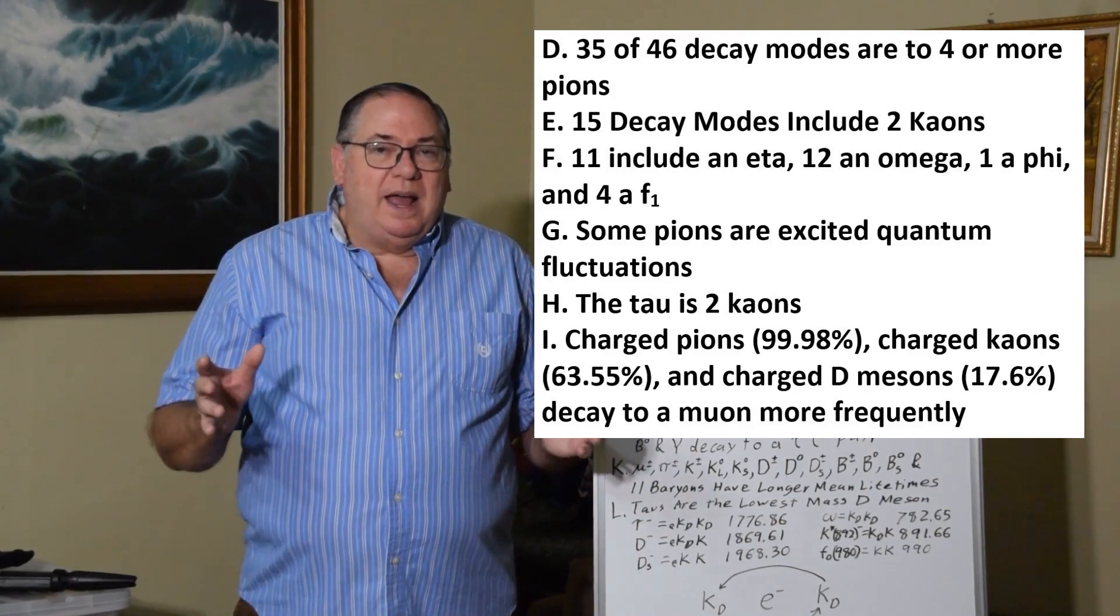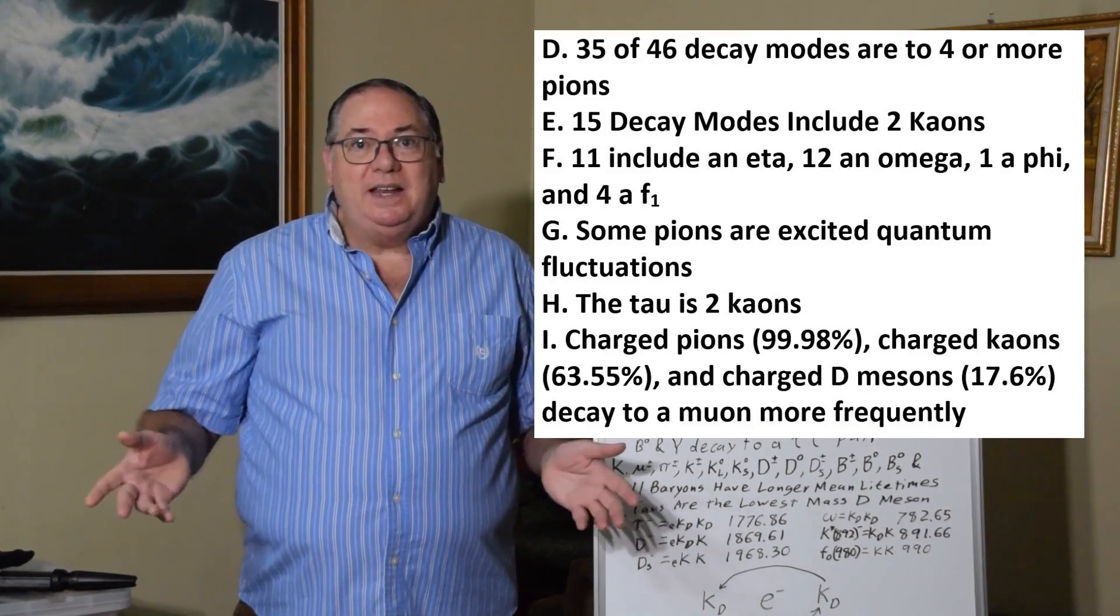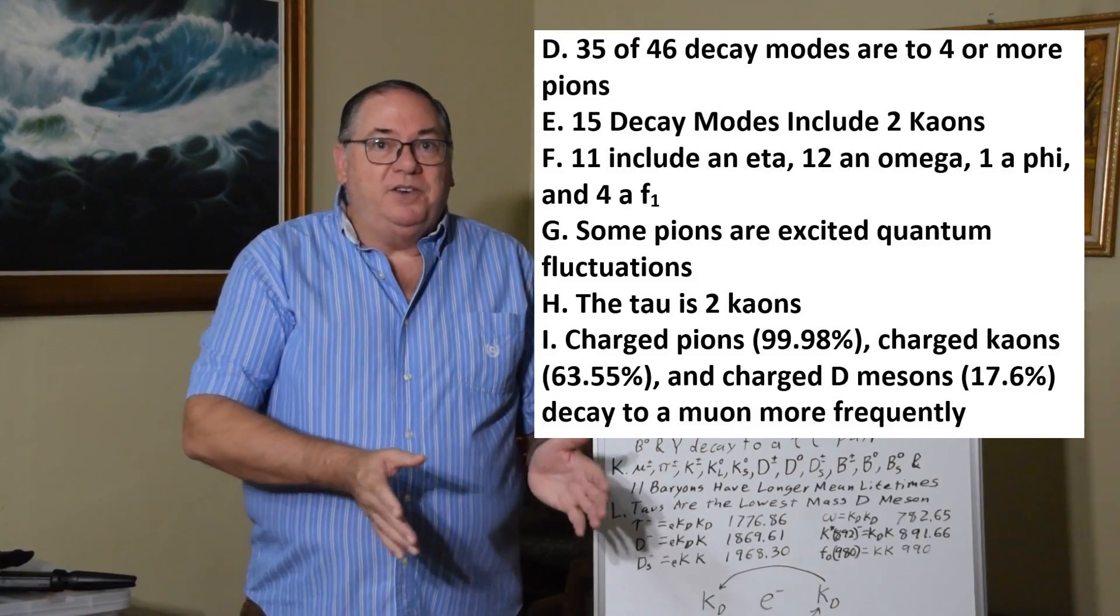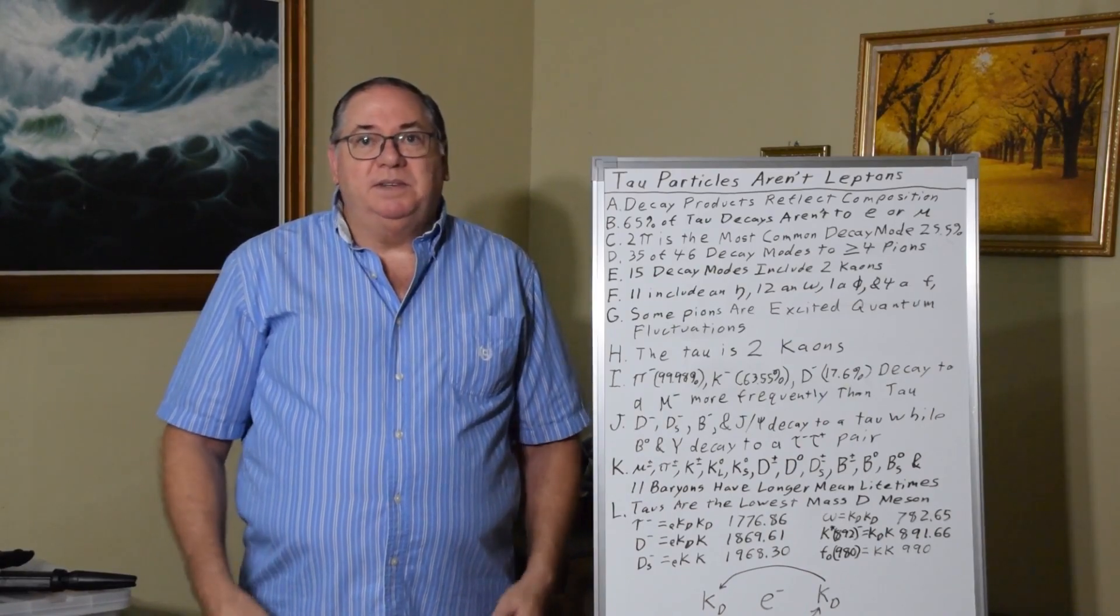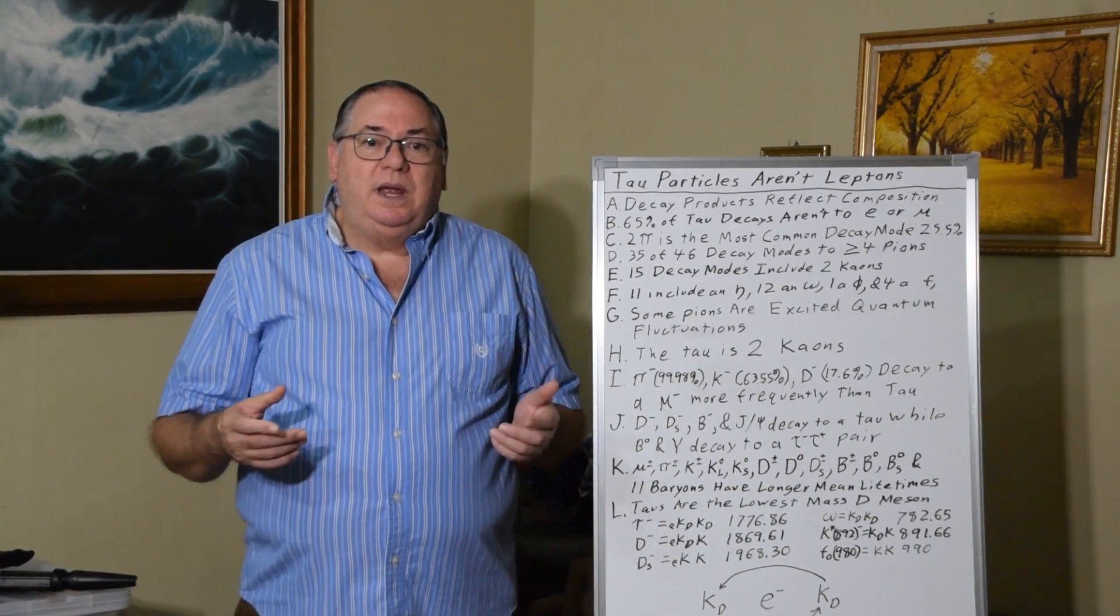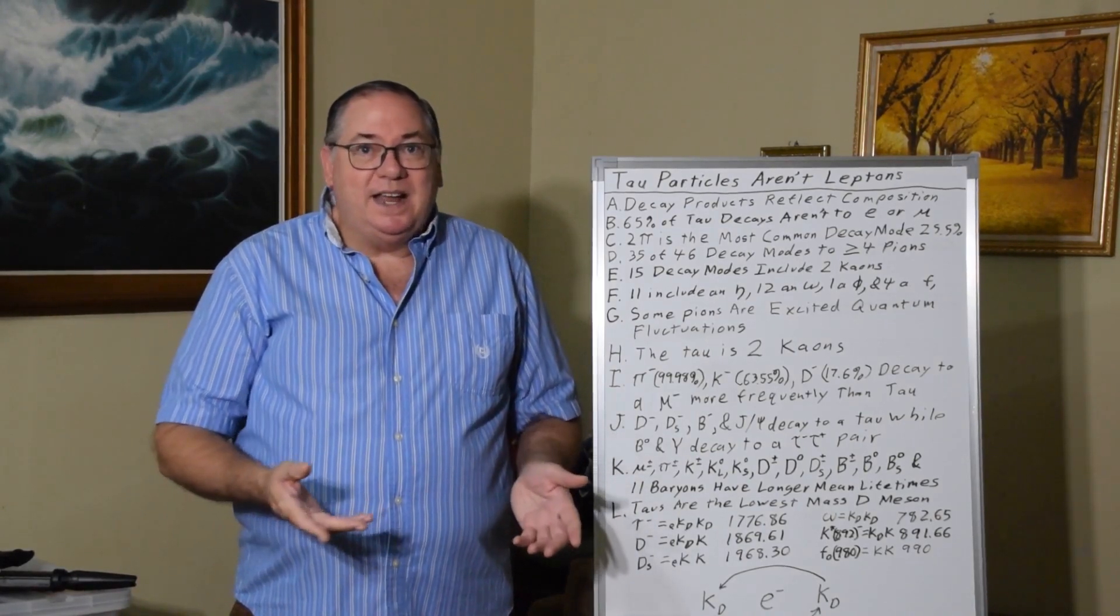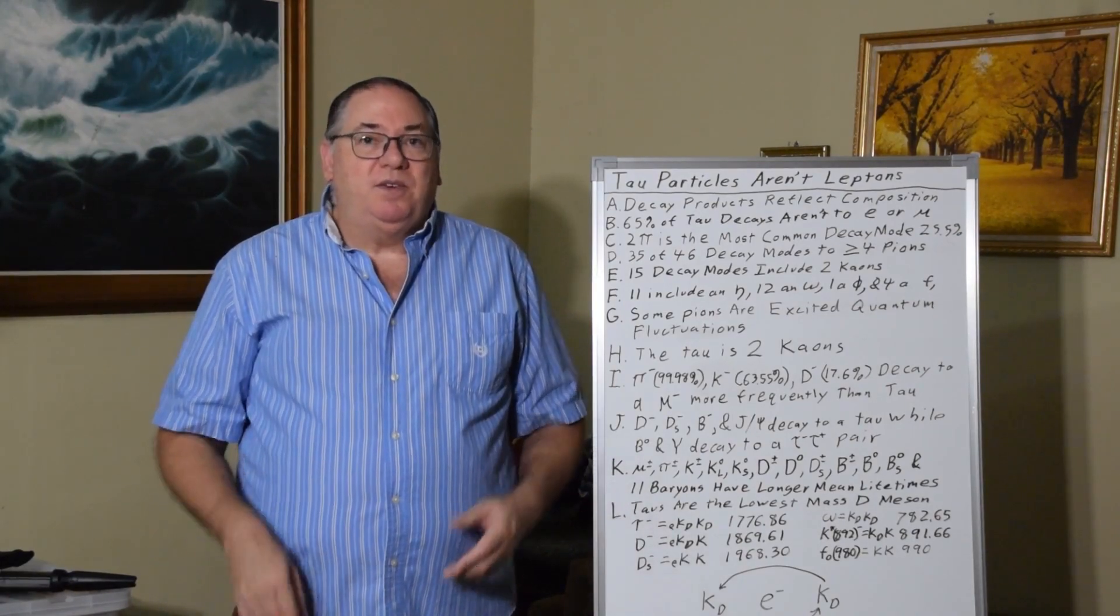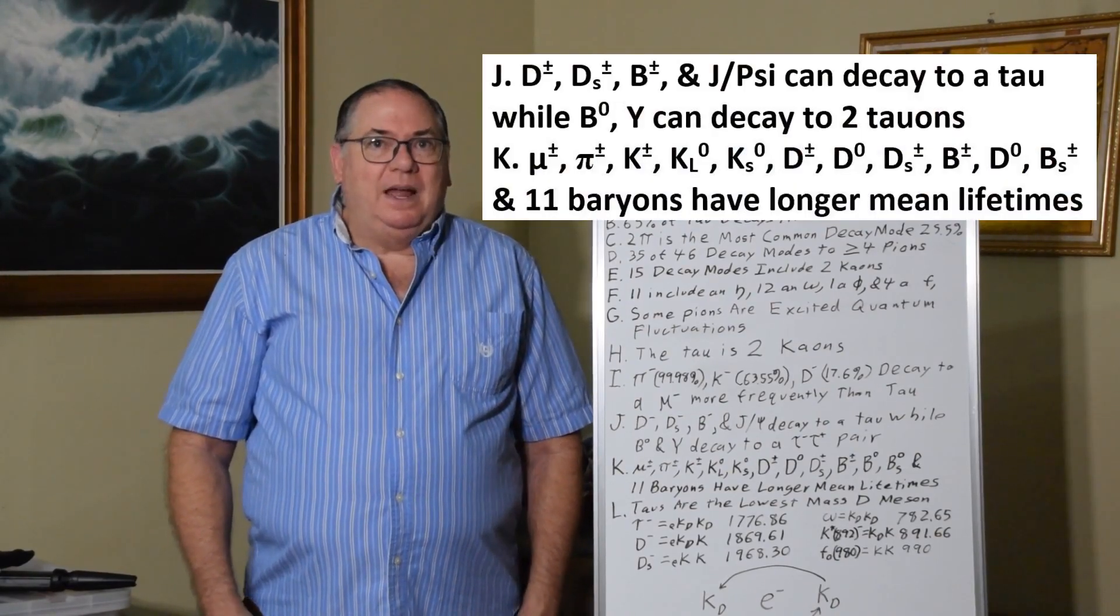So, not only do they decay to a couple of pions, but they're decaying to all kinds of different mesons that are low enough in energy to come from them, because of tau's at 1776 MeV. So, it's decaying just like any other meson, just like a D meson does. In fact, you can't distinguish them from a D meson based on their decay modes.